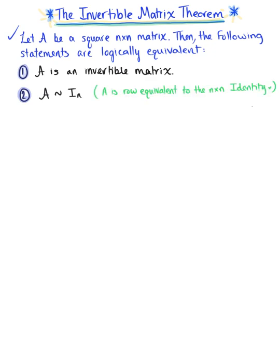If matrix A is row equivalent to the n by n identity matrix, what else can we think of that's equivalent to this? We know that matrix A must have n pivot positions.